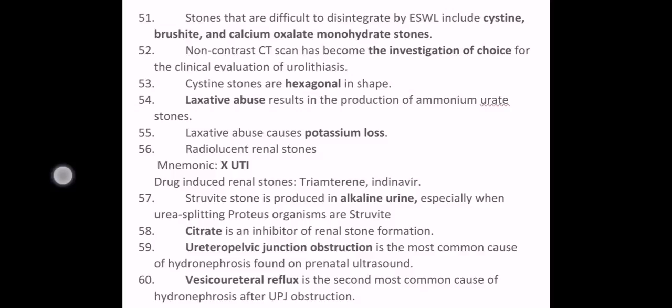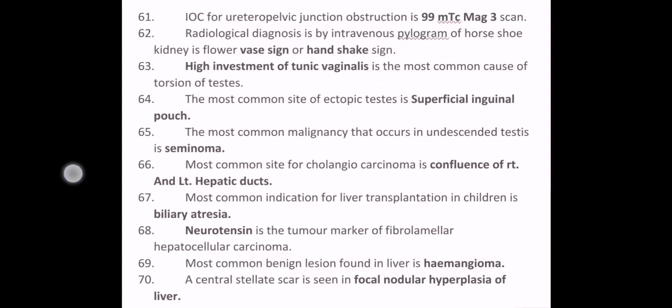Ureteropelvic junction obstruction is the most common cause of hydronephrosis found on prenatal ultrasound. Vesicoureteral reflux is the second most common cause of hydronephrosis after ureteropelvic junction obstruction. The investigation of choice for ureteropelvic junction obstruction is 99mTc-MAG3 scan. Radiological diagnosis of horseshoe kidneys on intravenous pyelogram shows the flower vase sign or handshake sign. High investment of tunica vaginalis is the most common cause of torsion of testis. The most common site of ectopic testis is the superficial inguinal pouch. The most common malignancy occurring in an undescended testis is seminoma.